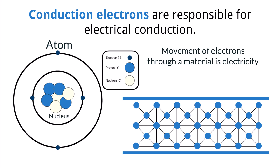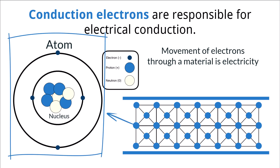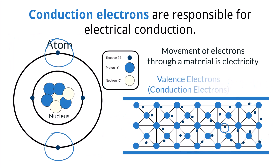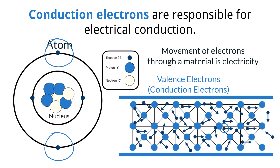To get an electron to move between atoms, we must investigate a piece of metal at the atomic level. A metal like copper, which is the most commonly used metal in electronics, is made up of copper atoms that arrange themselves into a lattice structure. Within that lattice structure, there are electrons orbiting at different distances from the nucleus. The electrons furthest from the nucleus are called valence electrons.